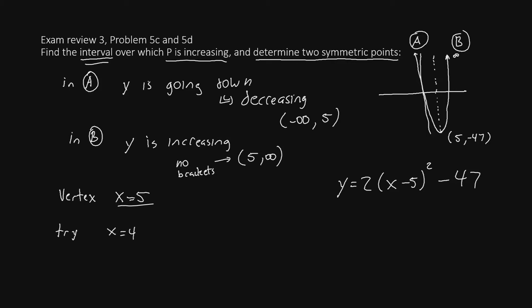and also try x equals 6, which is one higher than 5. So we go 1 to the left and 1 to the right, and that will give us our symmetric points. So let's try 4 in there. So we'll have y equals 2 times 4 minus 5 squared, subtract 47.